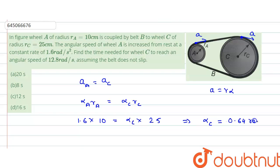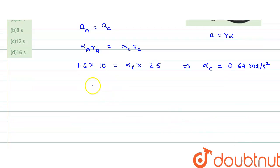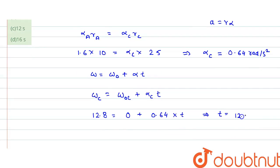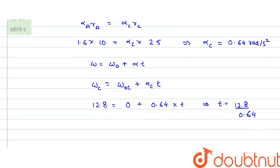Since the velocity of A is increasing at a constant rate, the angular velocity of C also increases at a constant rate, meaning acceleration is constant. We can use the rotational equation of motion: omega equals omega-naught plus alpha times t. For wheel C: 12.8 equals 0 plus 0.64 times t. Solving, time equals 12.8 divided by 0.64, which gives 20 seconds.